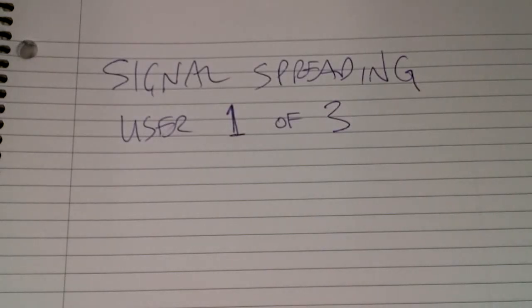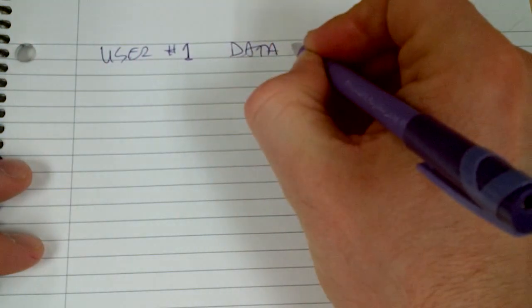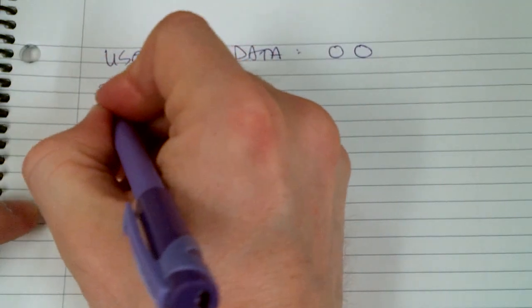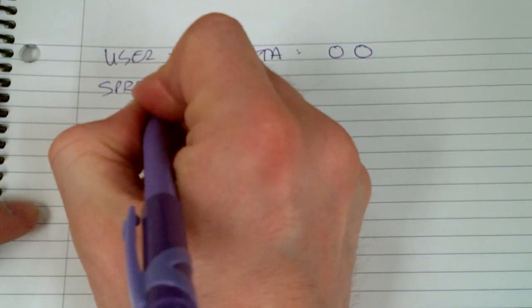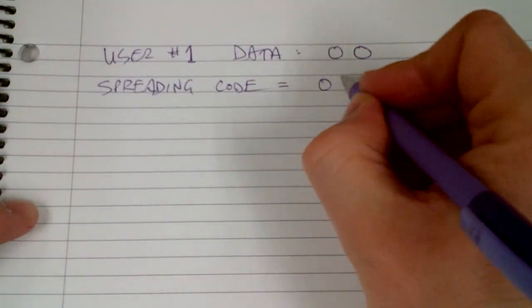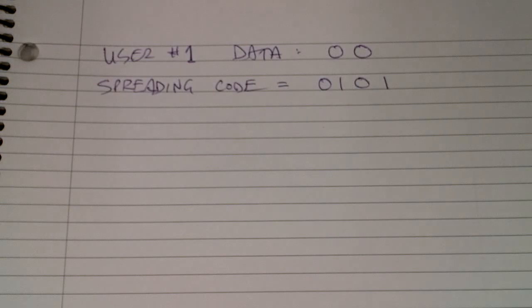Good morning. This is a video where a user has some data and wants to spread it using a Walsh code. So we have user number one, who has some data — two bits that the user wants to send — and the user is going to spread that signal with a Walsh code.